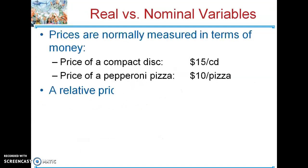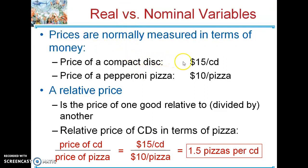Here's your nominal price — dollar prices. CD: $15, pizza: $10. A relative price, which is going to be a real price, is in terms of a physical good or service. Another way of looking at the price of a pizza or CD is in terms of another good. We take the $15 CD divided by the $10 pizza, and that tells you that every CD costs you 1.5 pizzas. So each CD costs 1.5 pizzas — that's a real price in terms of a physical good.